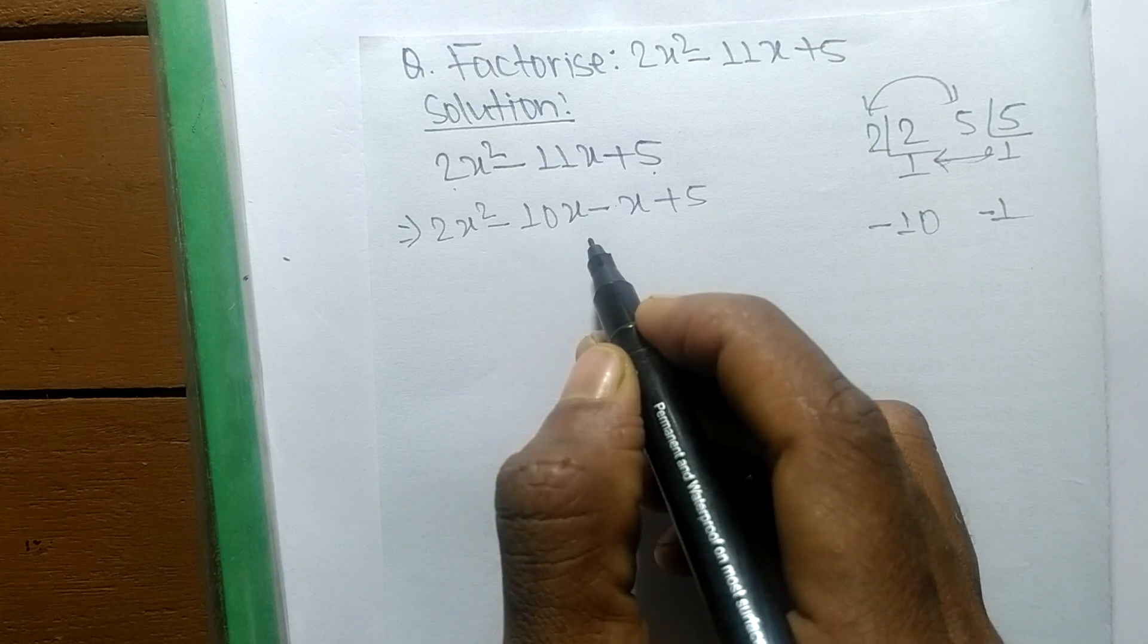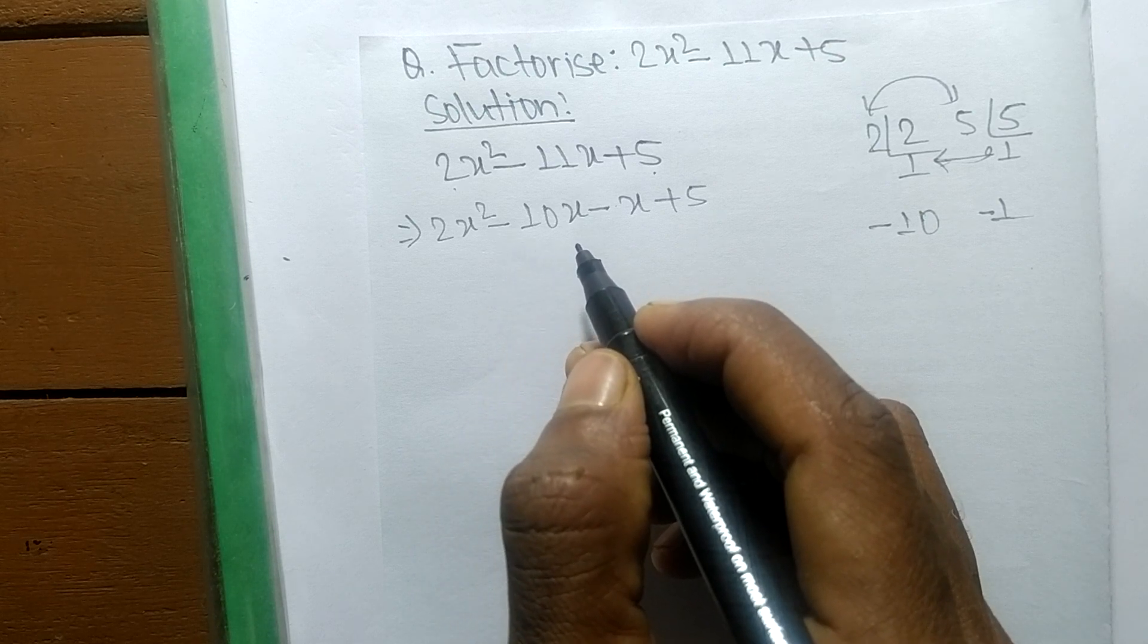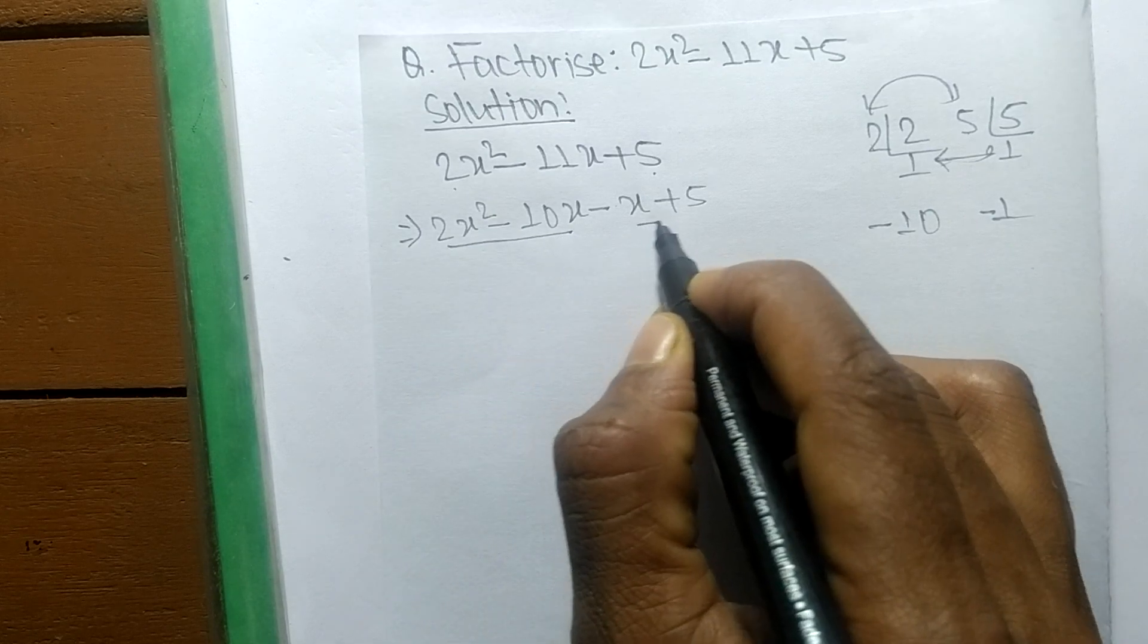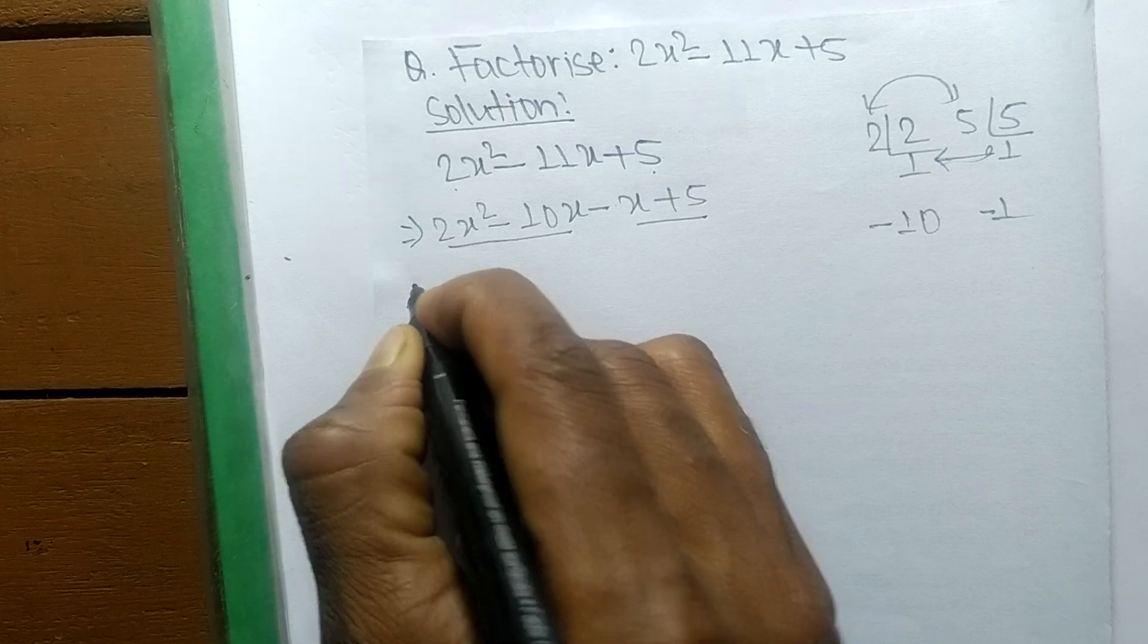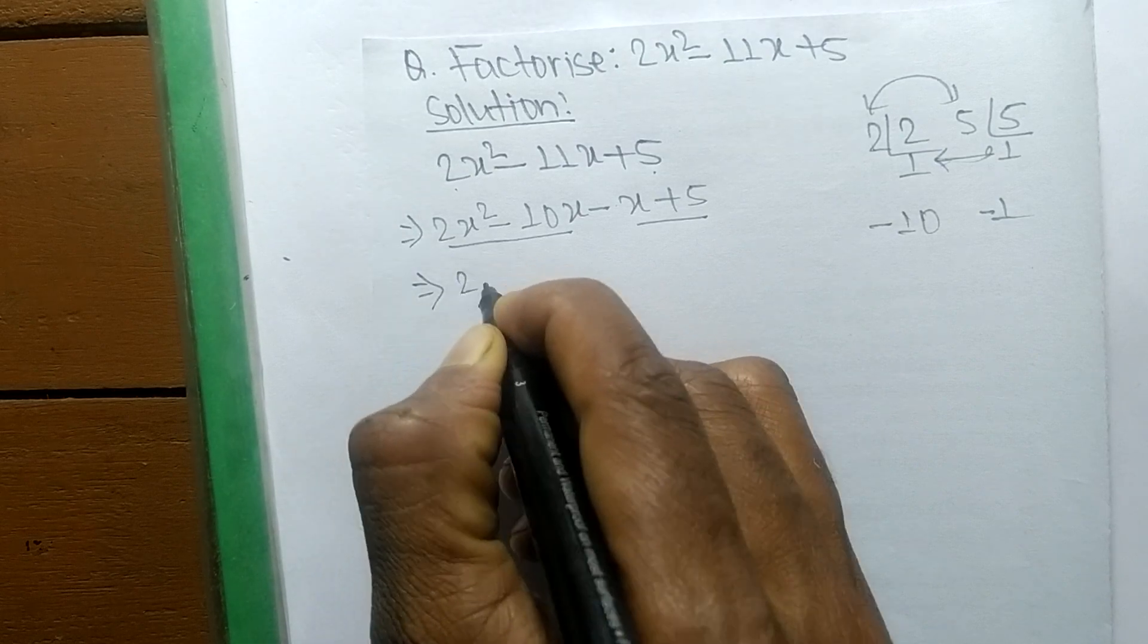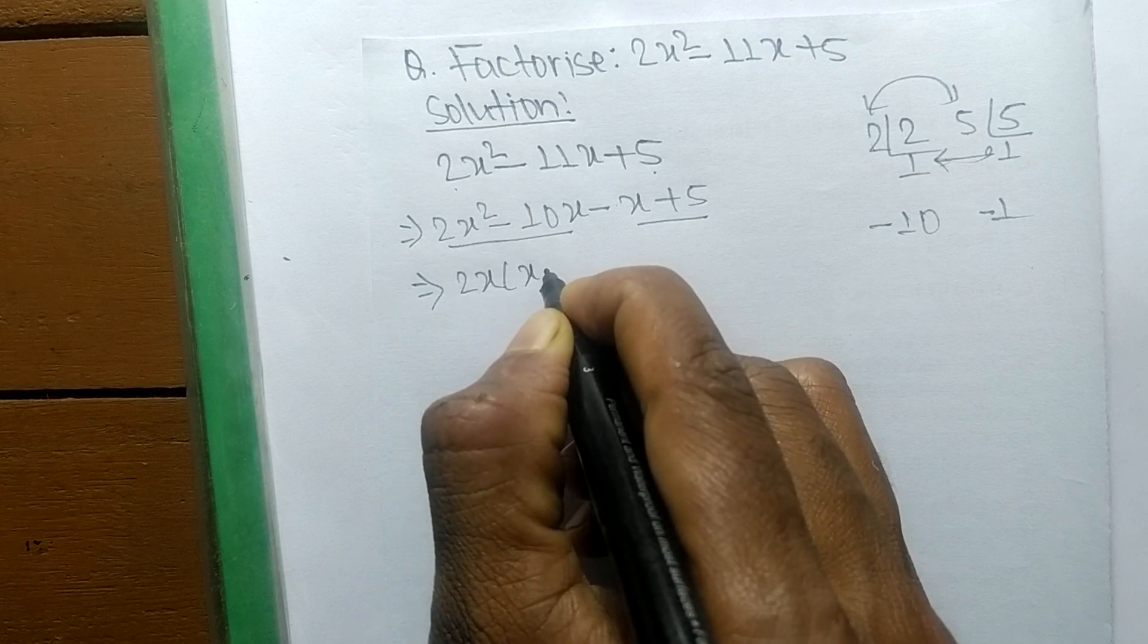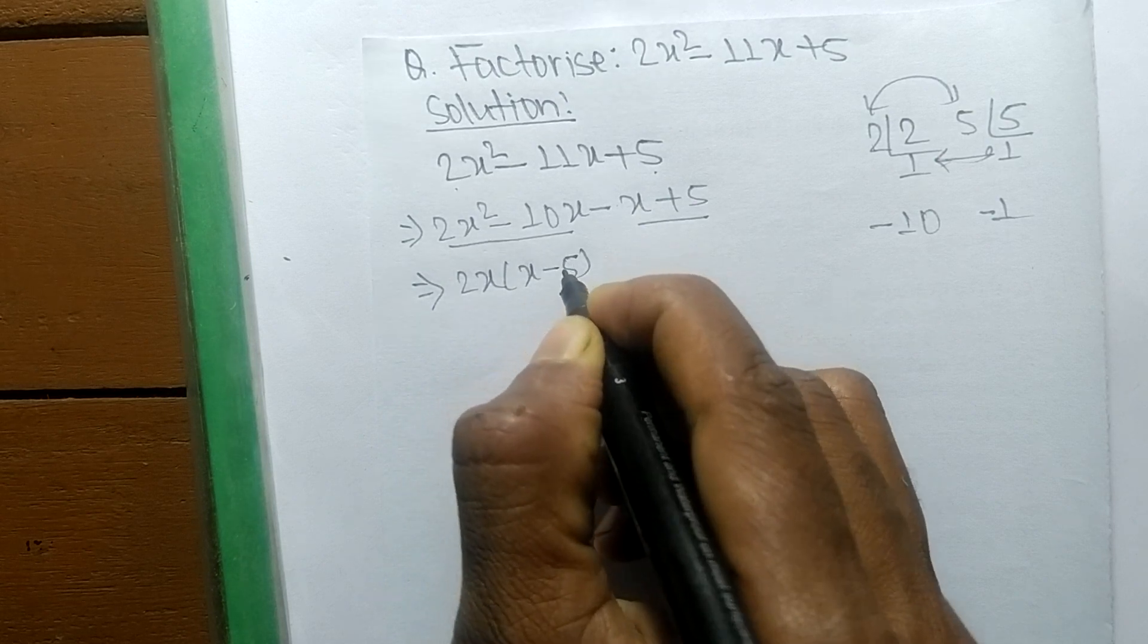Now we have to separate these expressions into two pairs. These both are first pair, and these both are second one. In the first pair, the common part is 2x, so the remaining is x - 5.